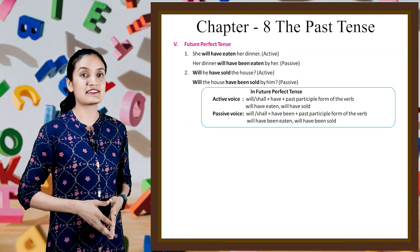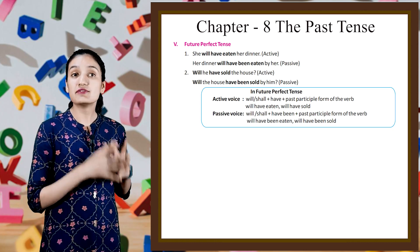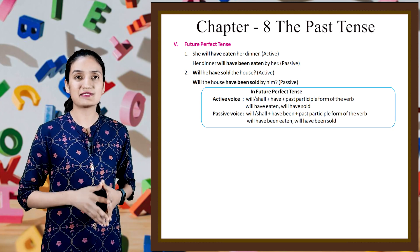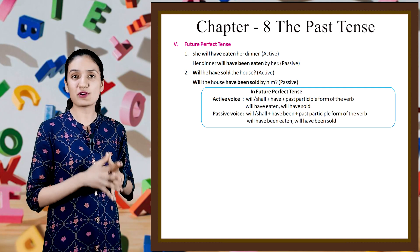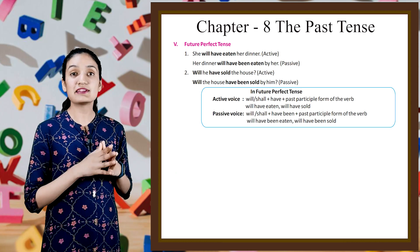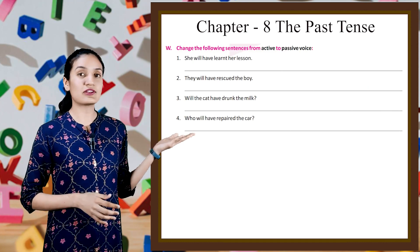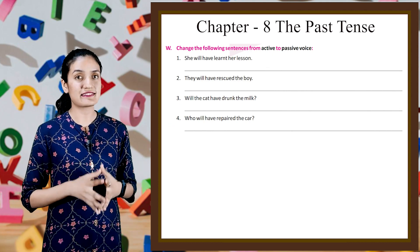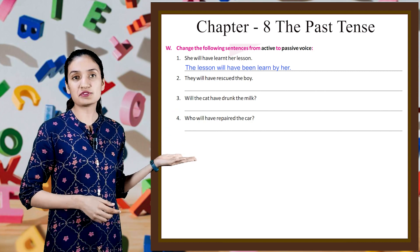Next is future perfect tense. 'She will have eaten her dinner' (active) — 'Her dinner will have been eaten by her' (passive). 'Will he have sold the house?' (active) — 'Will the house have been sold by him?' (passive). In future perfect tense, active voice uses will/shall plus have plus past participle — will have eaten, will have sold. Passive voice uses will/shall plus have been plus past participle — will have been eaten, will have been sold. Example: 'She will have learnt her lesson' becomes 'The lesson will have been learnt by her.' Do the rest sentences by yourself.